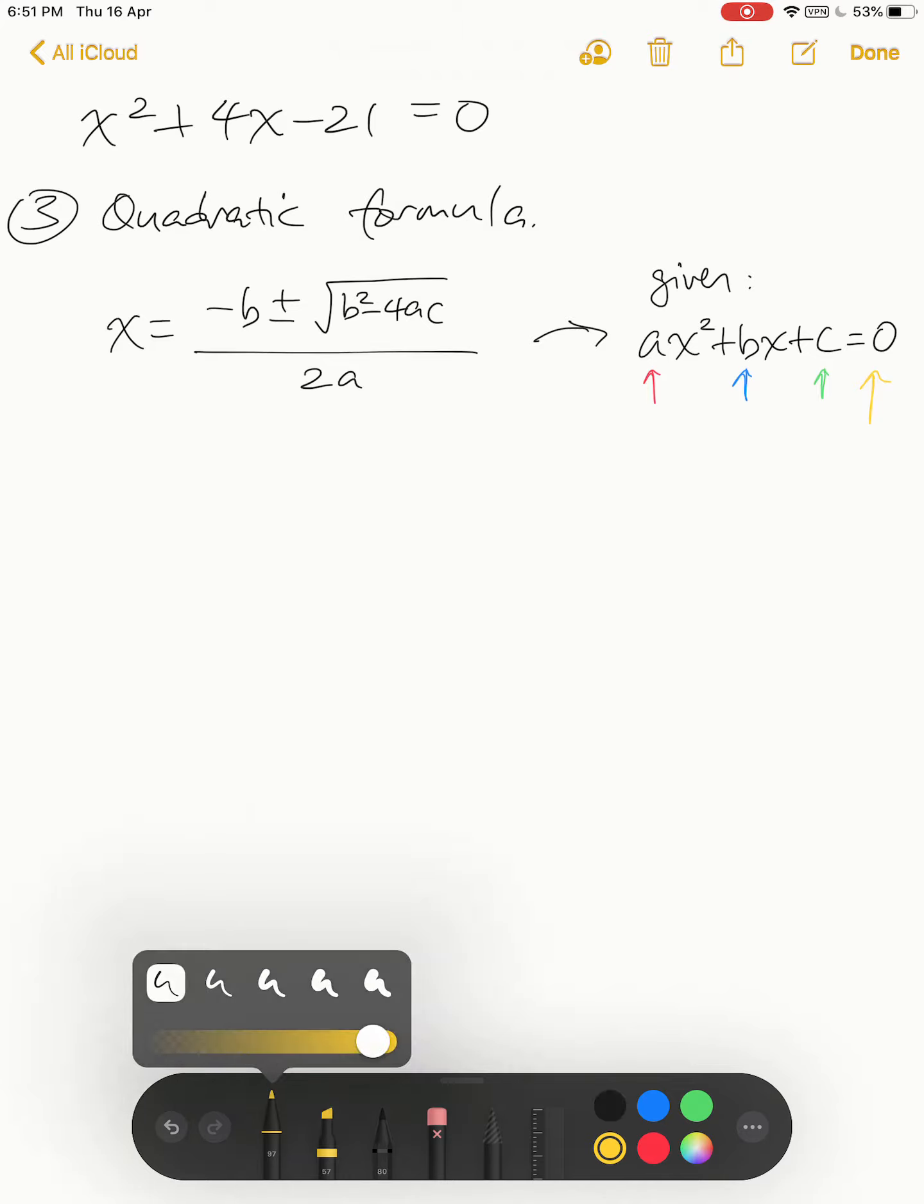In this case, what is my a? Good habit is to write down what is my a, b, and c. For my a, I look over here—it's one, not zero, because there's one times x². So a is one. What is my b? B in this case is four.